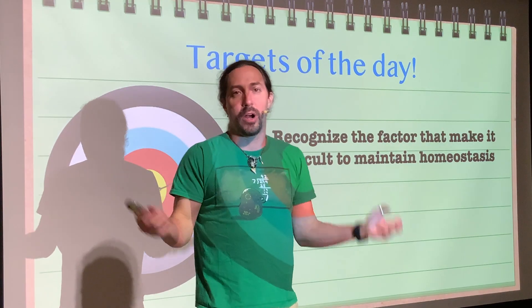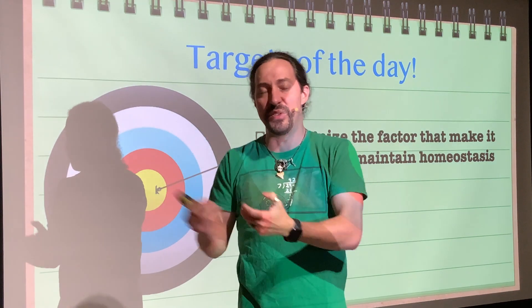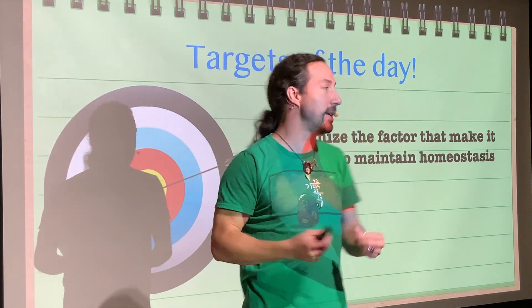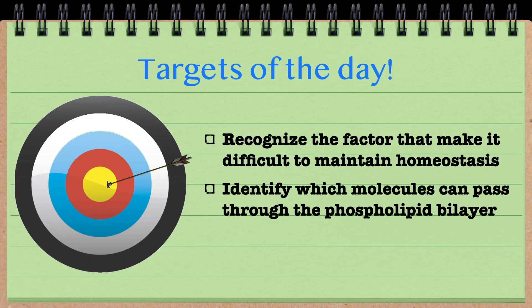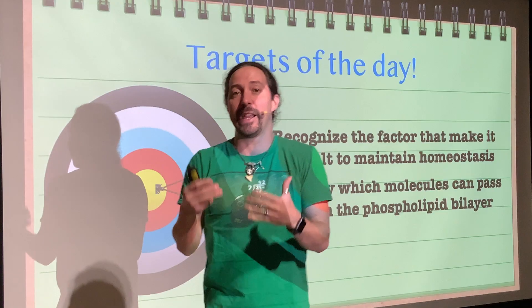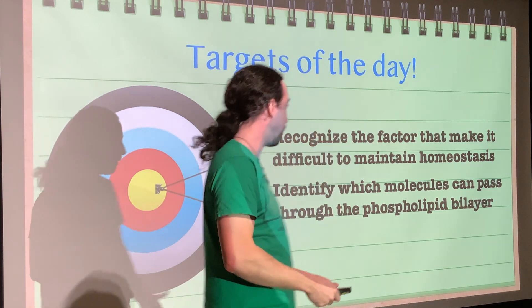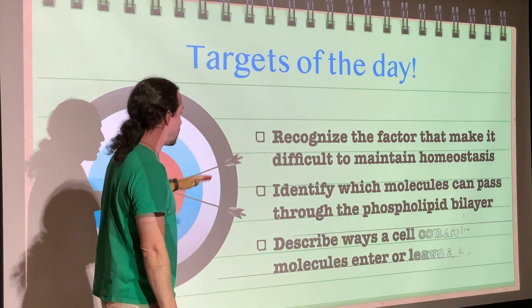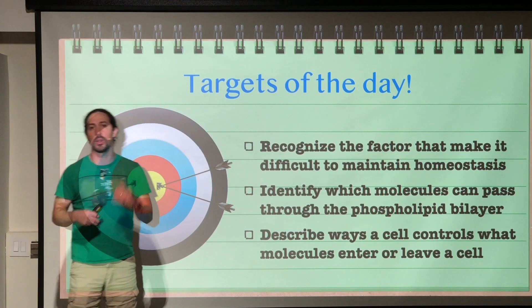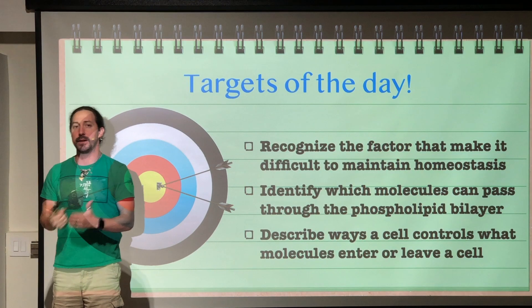What does a cell actually have to do to maintain homeostasis? What does it have to fight against? Next, we'll identify which molecules can just pass through the phospholipid bilayer — the ones the cell can't really control — and then describe the ways a cell can control which molecules enter and leave.